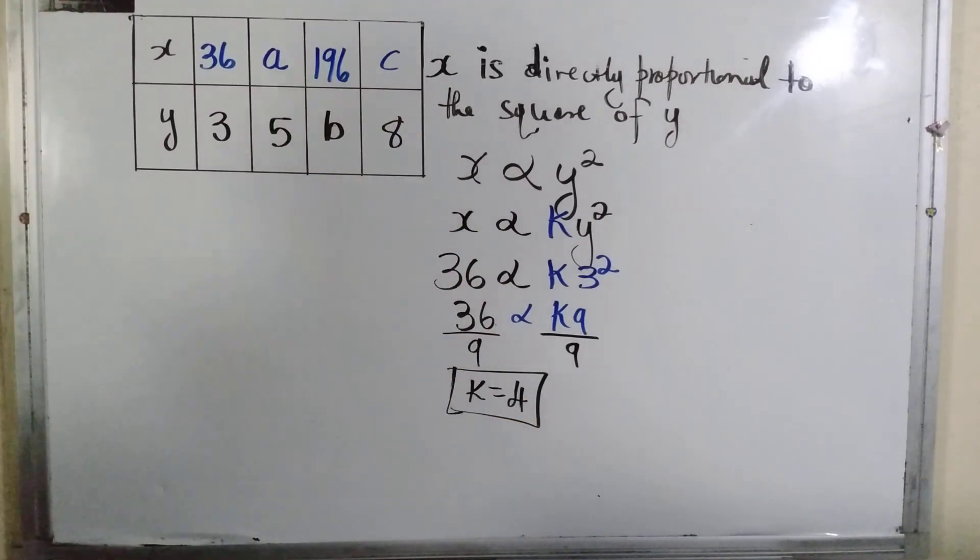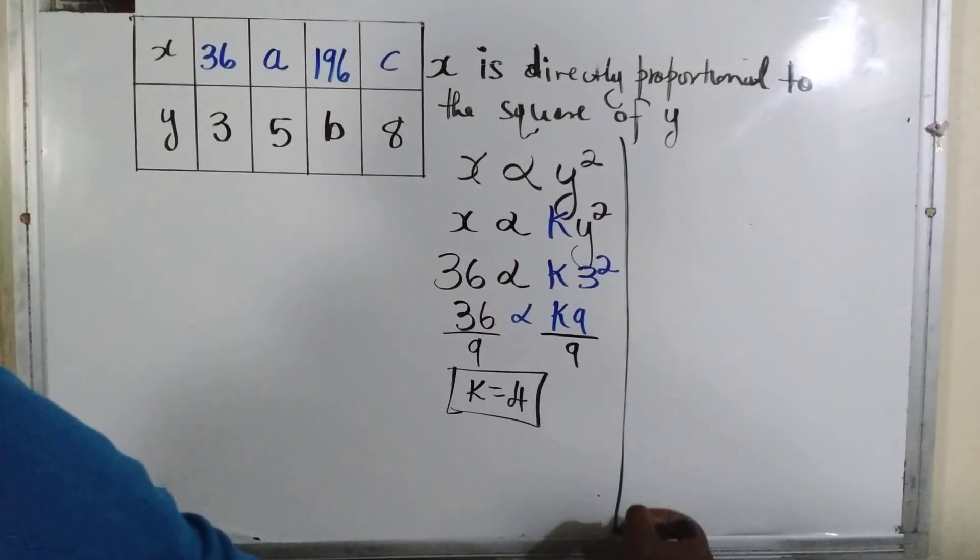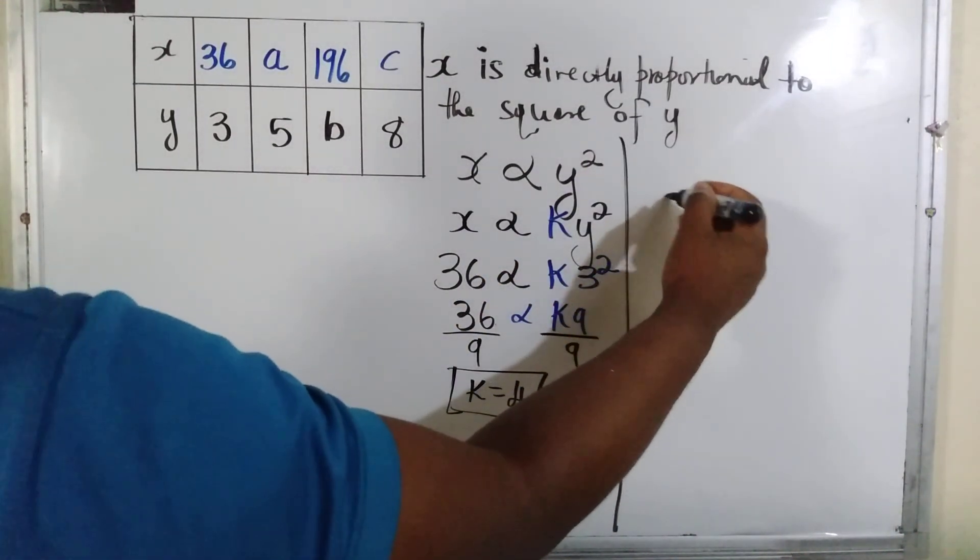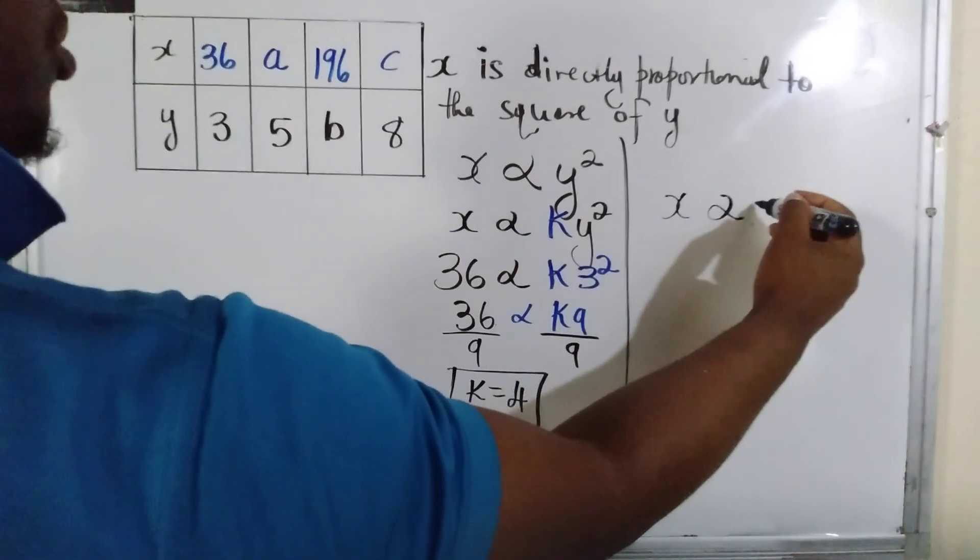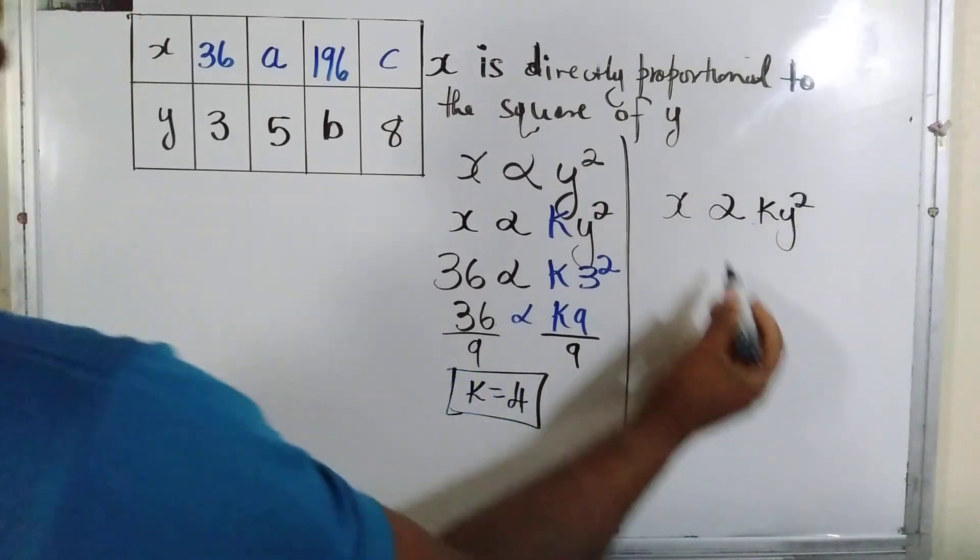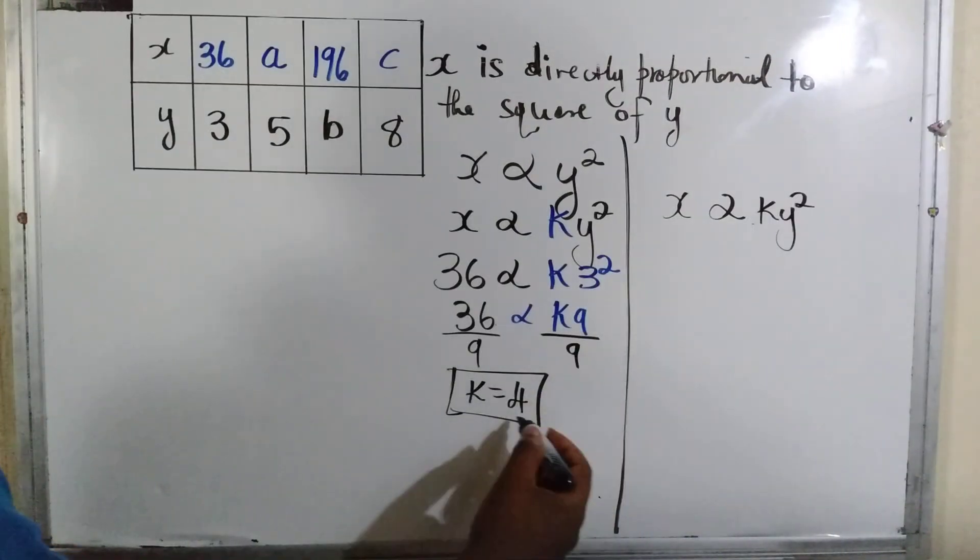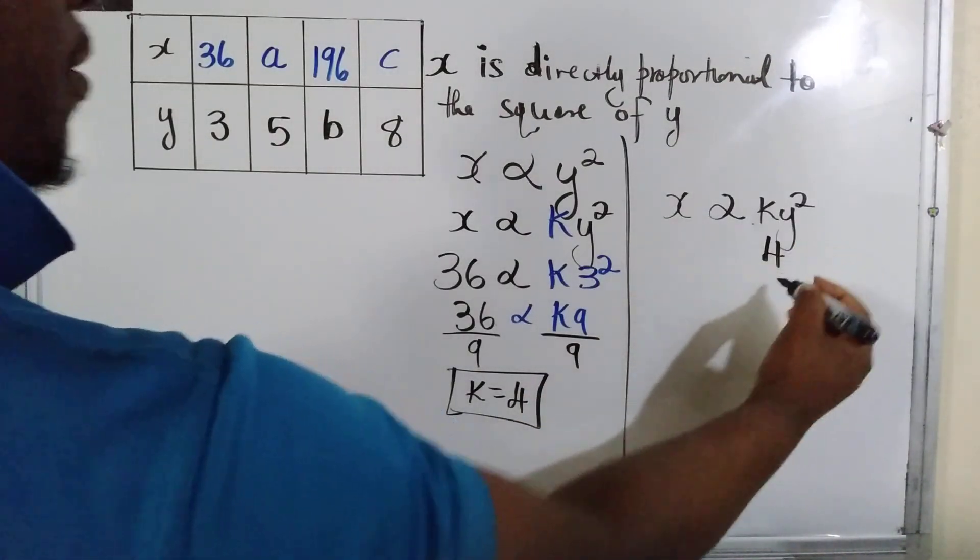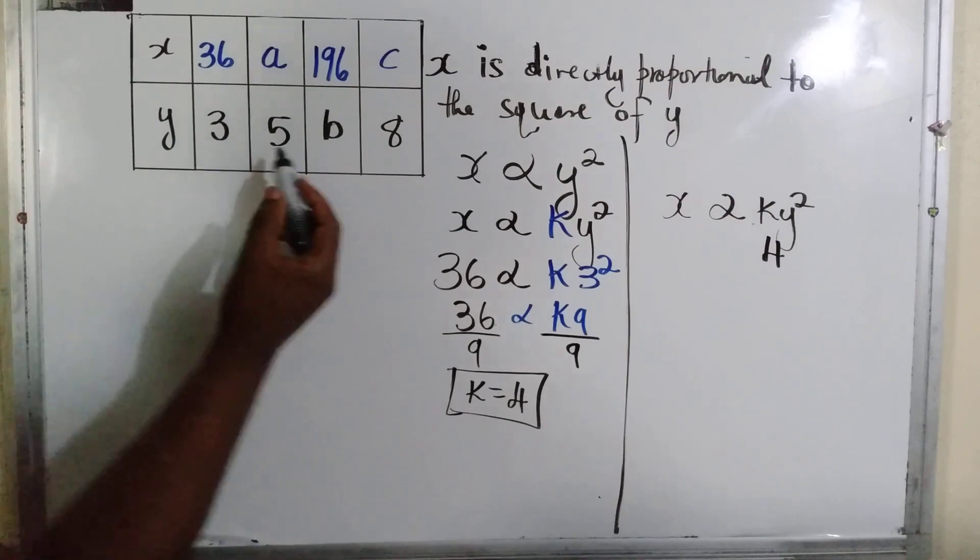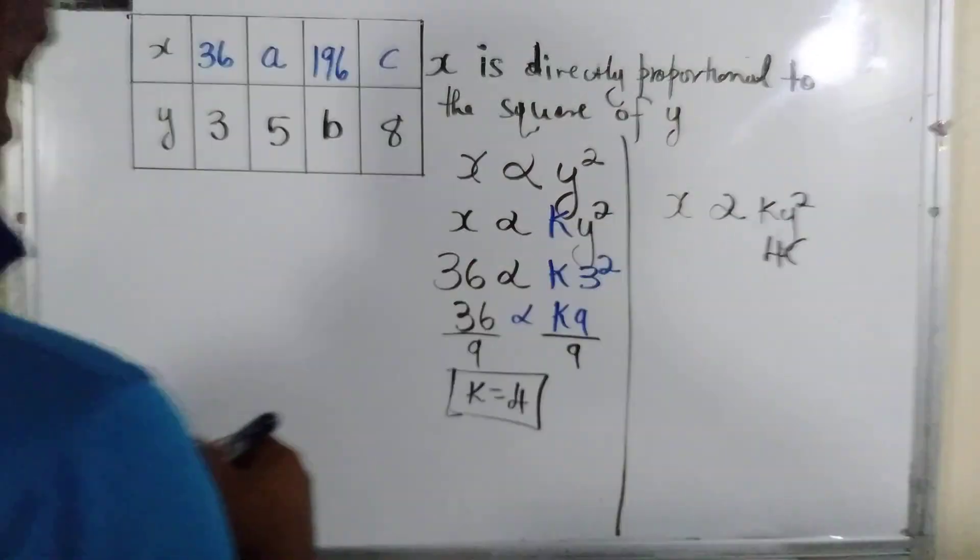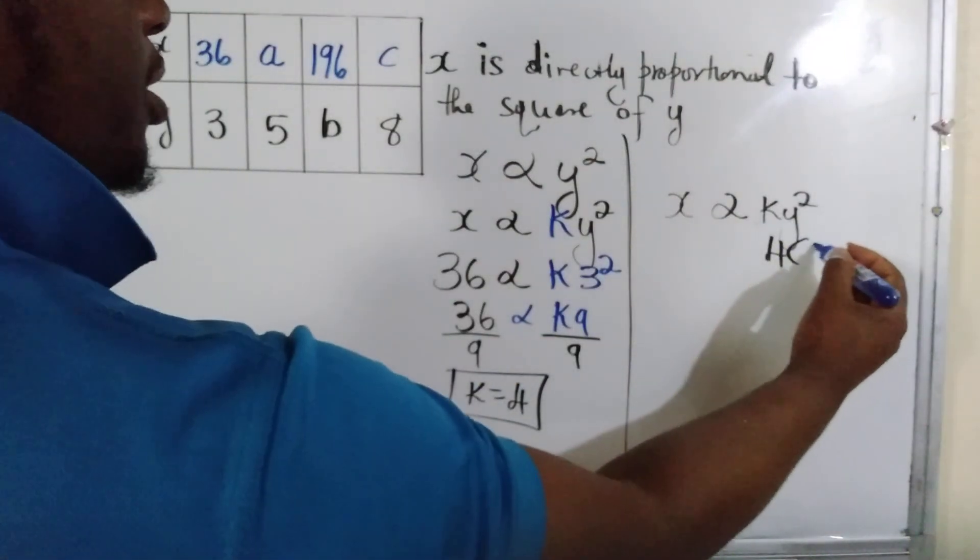Now we have to find x when y equals 5. We're going to plug that into the equation, so x is directly proportional to k y squared. We know all these values, so k is 4 and y is 5.